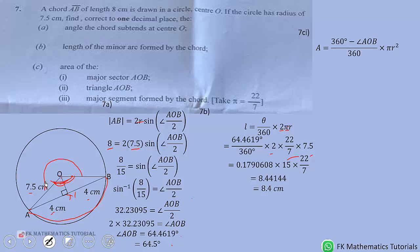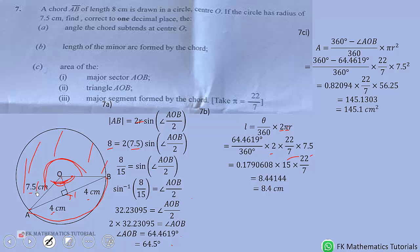From 360 to get this angle here, the theta, because we are finding the area of this major sector. So that will simplify that. Do the substitution, simplify to get this one, 145.1 centimeters squared.